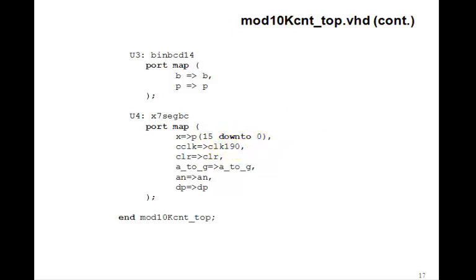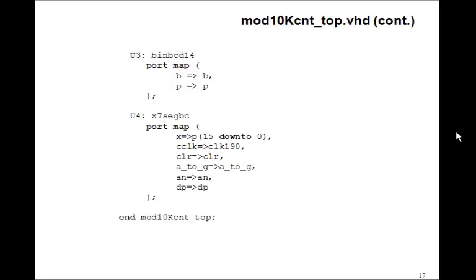So this is the top level design. This would be a good one for you to compile and implement and download to your FPGA board. And when you run it, the seven segment display should count fairly rapidly from 0000 to 9999, and then wrap around.